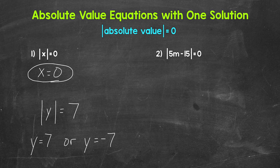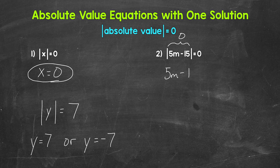Let's move on to number two and take a look at another example. We have the absolute value of 5m minus 15 equals zero. Now here we know that 5m minus 15 has to equal zero because the only possibility to make this work is zero. The absolute value of zero equals zero. So in order to find the solution, we need to solve 5m minus 15 equals zero, and this will give us one solution. In other situations, we have to write and solve two equations, one equal to a positive and one equal to a negative, but here we only have one option: zero.